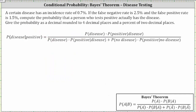Now let's find the same probability using the formula for Bayes' theorem on the next slide. Event A is the event of having the disease, and event B is the event of testing positive. Applying the formula, the probability of A is the probability of having the disease; the probability of B given A is the probability of testing positive given they have the disease. In the denominator, we have the probability of disease times the probability of testing positive given they have the disease, plus the probability of not A — no disease — times the probability of B given not A, which is the probability of testing positive given no disease.